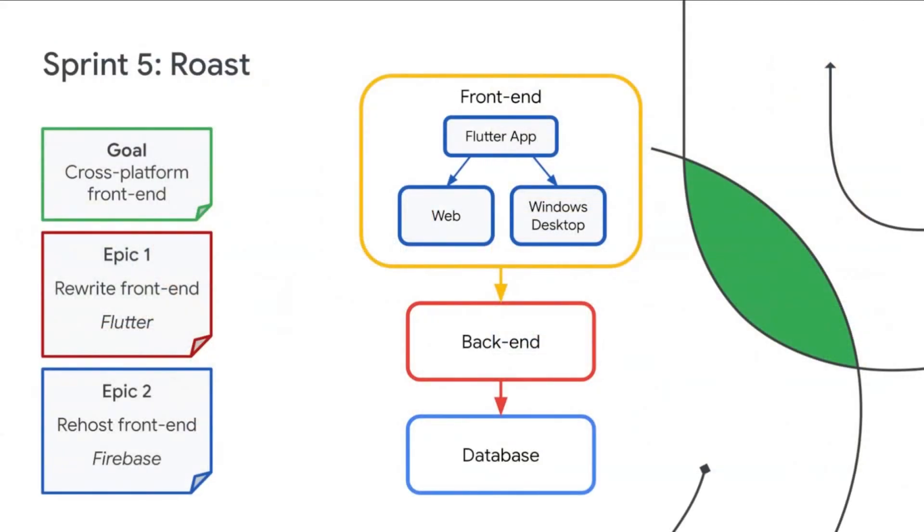That was a lot of decisions. Now let's see what happened when we actually hit the ground and started coding. Let's go back and show you what our two most exciting sprints looked like. For the first sprint, we focused on building a cross-platform front-end. Our first effort was to rewrite the front-end to Flutter.